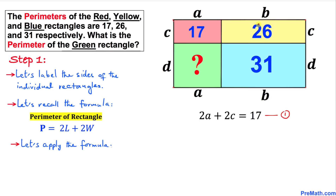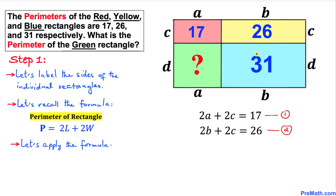Now let's move on to the yellow rectangle. The perimeter is going to become simply two times b plus two times c, which equals 26. So: 2b + 2c = 26. I'm going to call this equation number two.